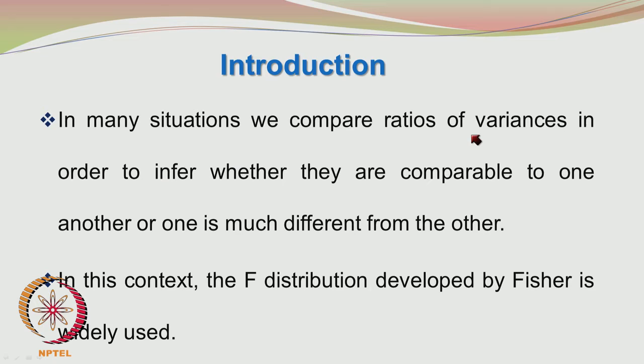So far we have been looking at the sample mean and the distribution of sample means. The variance of the population is also an important parameter, and we want to compare two variances and make decisions on them. In this connection, the F distribution is applied. Here we compare ratios of variances in order to infer whether they are comparable to one another or one is much different from the other.